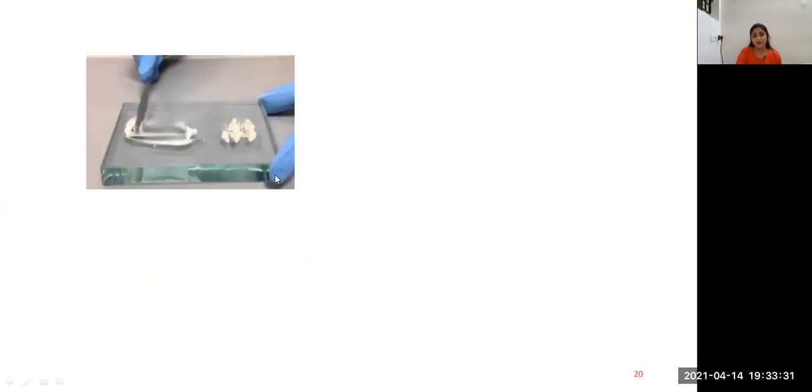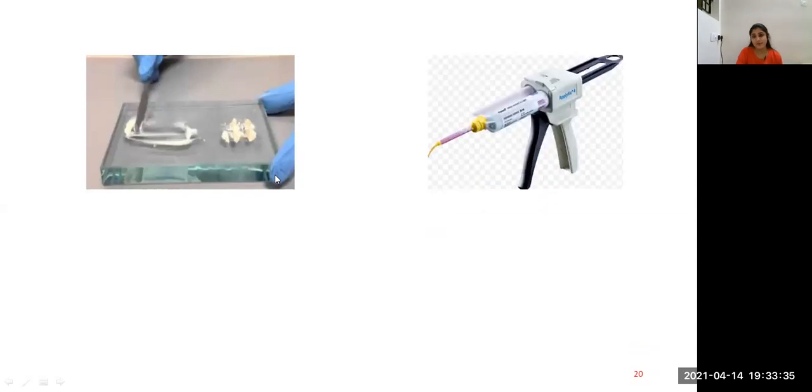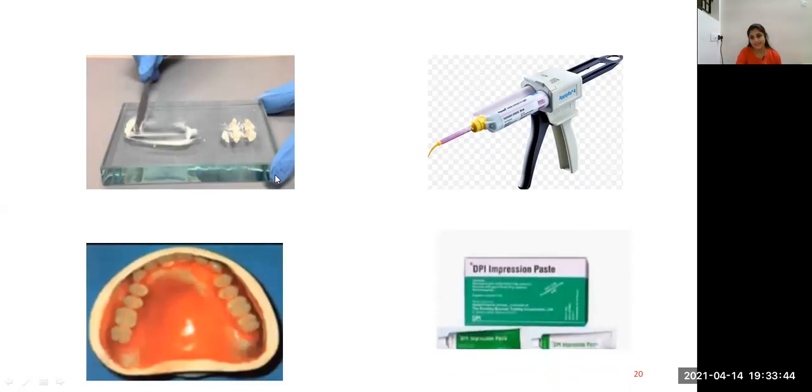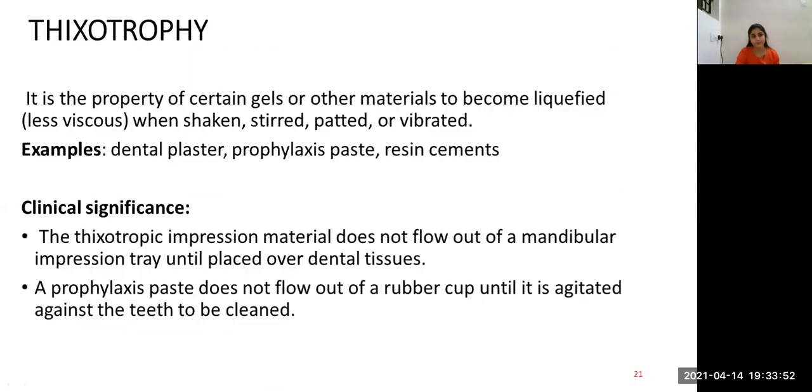Example of Newtonian fluid is zinc phosphate. Example of pseudoplastic is rubber-based impression material, that is like putty. And for dilatant, it is denture-based resin. And for Bingham plastic, it is impression paste. That is, until it reaches a threshold level, the impression paste will not come out.